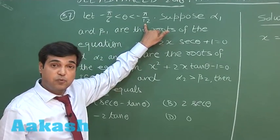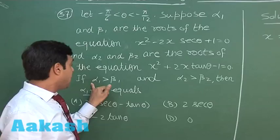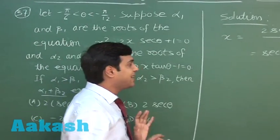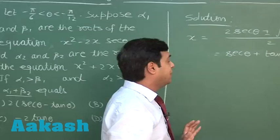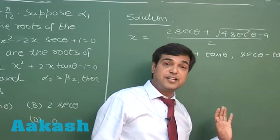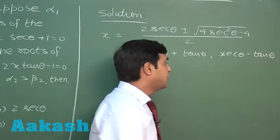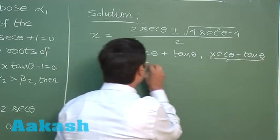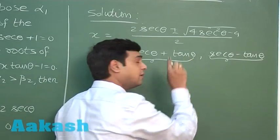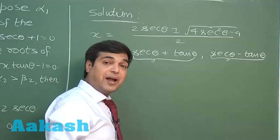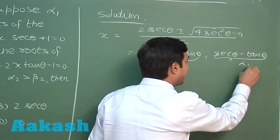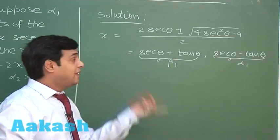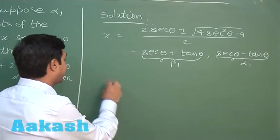The interval for theta is minus pi by 6 to minus pi by 12, which is in the fourth quadrant. In the fourth quadrant, secθ is positive and tanθ is negative, so secθ + tanθ is larger than secθ − tanθ. Since alpha 1 is greater than beta 1, alpha 1 equals secθ + tanθ and beta 1 equals secθ − tanθ.